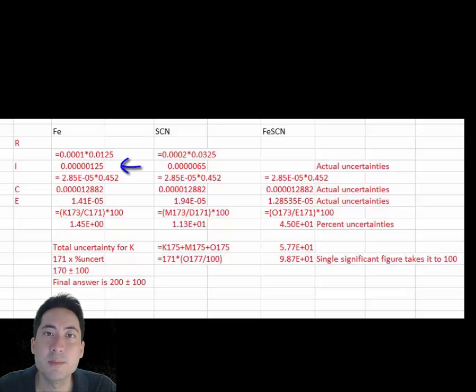Now moving on to the rice table. The actual uncertainties of the initial concentrations is determined. The actual uncertainty of the final iron thiocyanate concentration is determined, and this is the same for the reactants. The final equilibrium uncertainties are then the addition of the actual uncertainties, as this is the addition and or subtraction to obtain the final values.